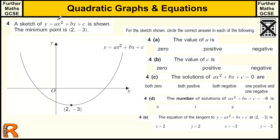So we've got a sketch of an equation, a general equation of a quadratic ax squared plus bx plus c shown here. They're not telling you what the actual equation is, but they're telling you the minimum point is (2, -3). And that should tell us a few things about the equation.